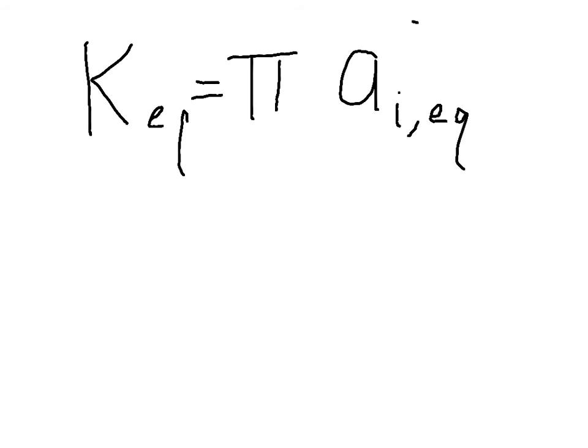Let's take a second here to just define equilibrium constant. A formal definition of the equilibrium constant is the product of the activities of all the reactants and products at equilibrium taken to their stoichiometric coefficients.